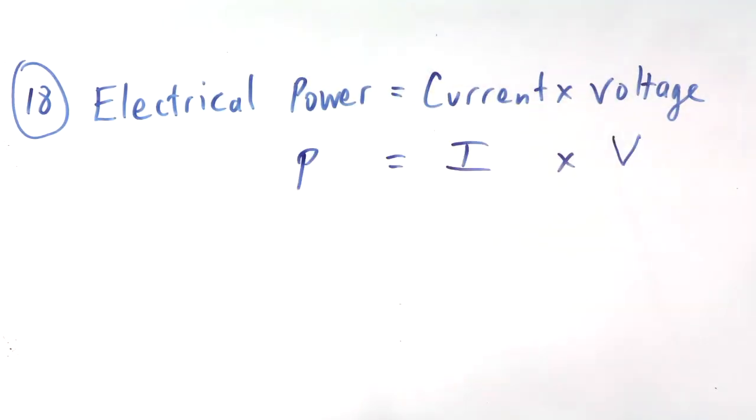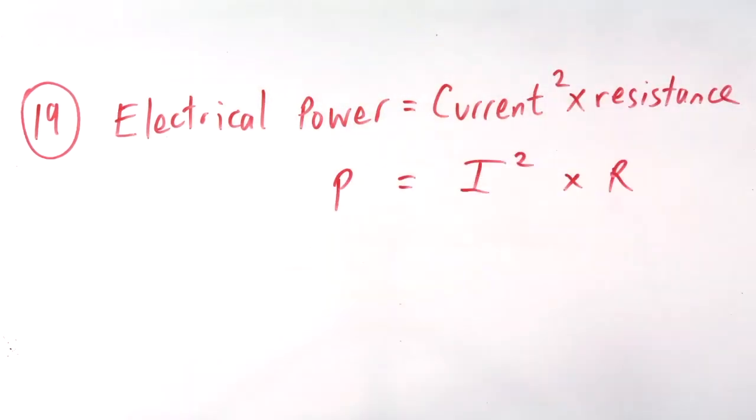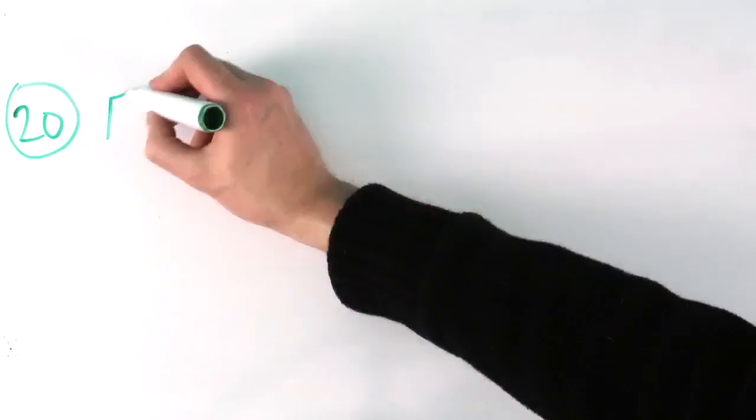Eighteen, electrical power equals current times voltage. Nineteen, electrical power equals current squared times resistance.